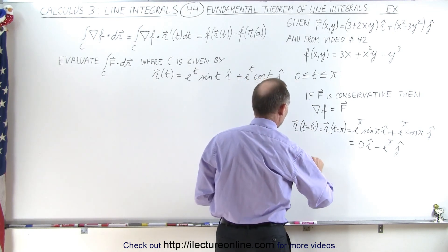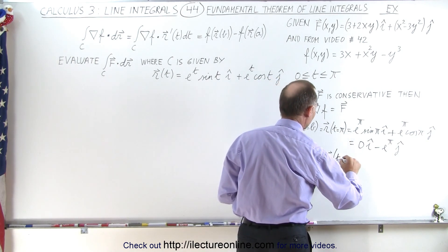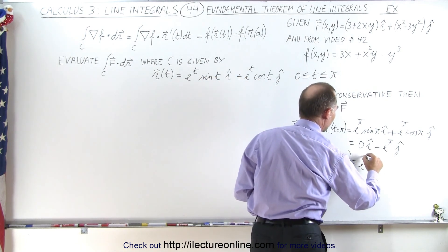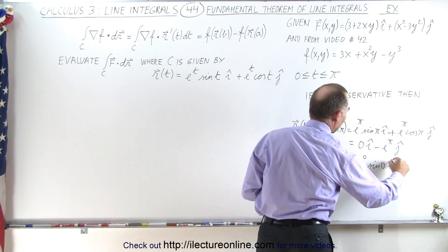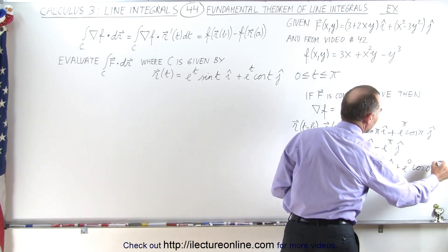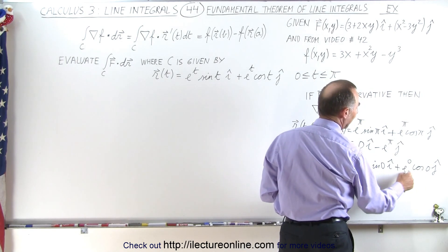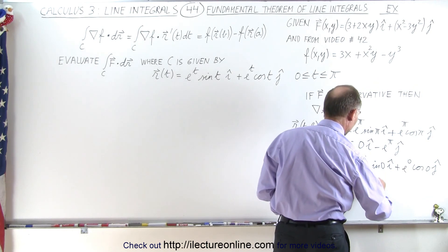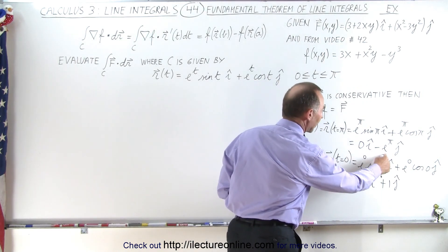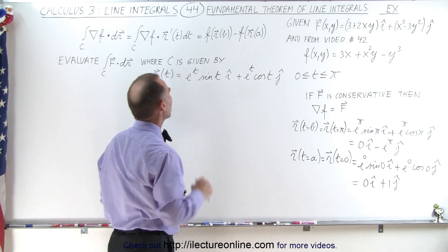Now we evaluate at the initial location, r at t = 0, since t goes from 0 to π. This gives e^0 times sine(0) in the i direction, plus e^0 times cosine(0) in the j direction. Since sine(0) = 0, cosine(0) = 1, and e^0 = 1, this becomes 0i + 1j. So we now have the x and y components of our position vector at both the endpoint and the initial point.